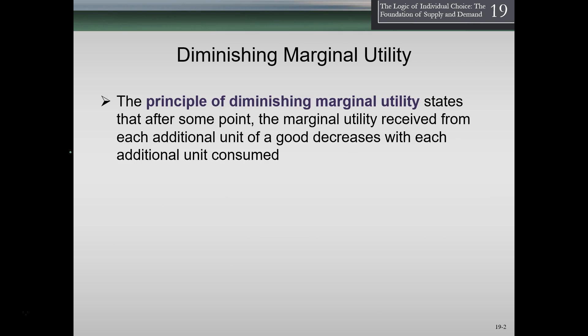We've talked about what utility is and we've graphed utility. Now we're going to talk about some definitions. The principle of diminishing marginal utility states that after some point, the marginal utility received from each additional unit of a good decreases with each additional unit consumed.